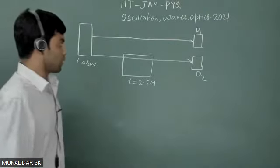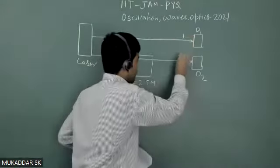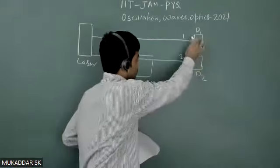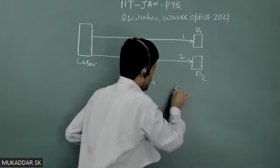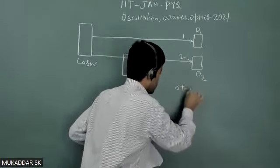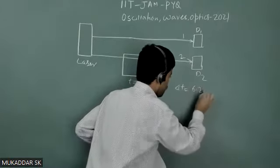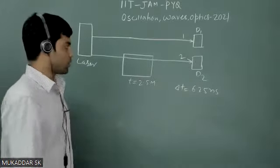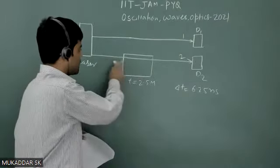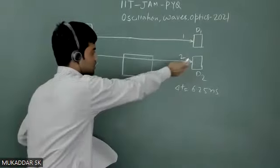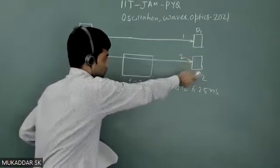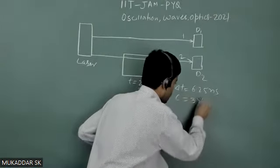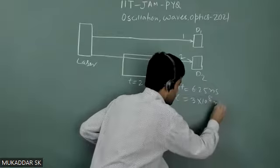And time delay between ray 1 and ray 2, that is the time delay to reach detector D1 and detector D2, that time delay delta T is given as 6.25 nanosecond. Obviously, there will be time delay because this ray is passing through some medium, so there will be delay to reach ray 2 at detector D2. And also speed of light is given, that is 3 into 10 to the power 8 meter per second.